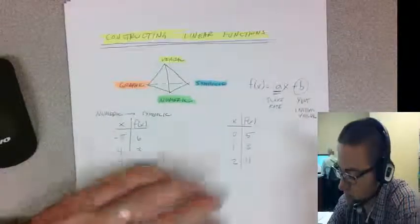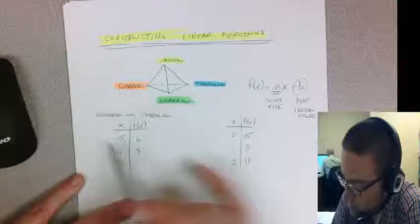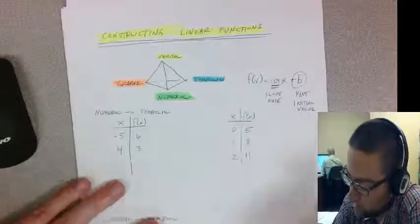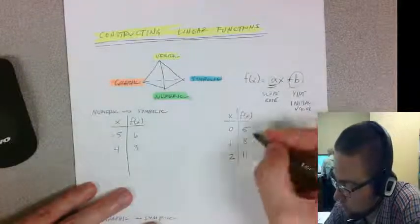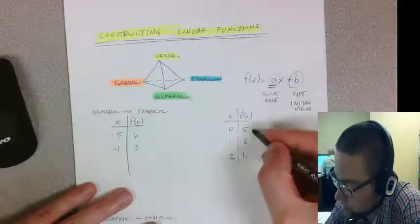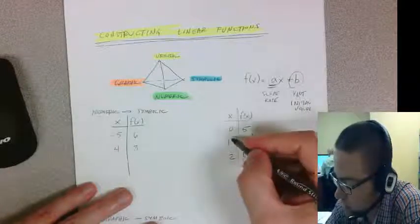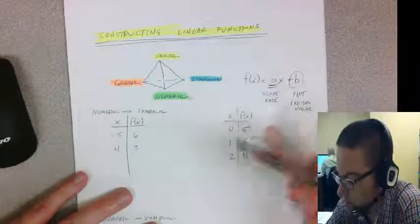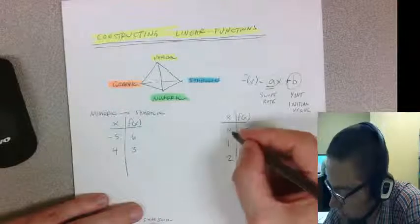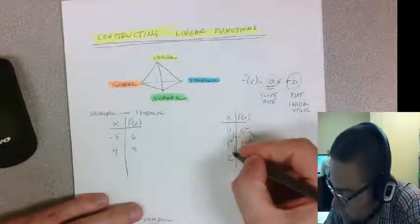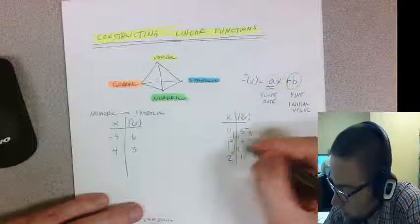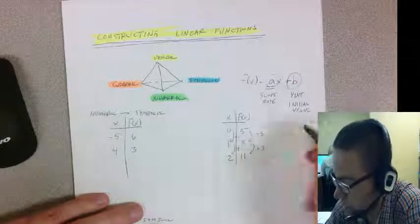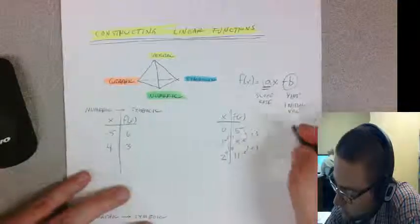When you're given a numeric representation of a line like a list of points or a table of values, you can find the constant rate of change by taking the difference in y values over the difference in x values. Here I'm going up by one each time in x, and over here I'm going up by three in y. The constant rate of change is three for every one x I'm going up.